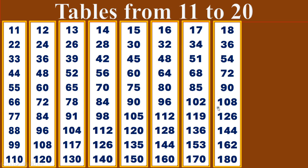18 sixes are 108. 18 sevens are 126. 18 eights are 144. 18 nines are 162. 18 tens are 180.